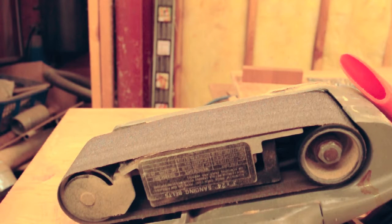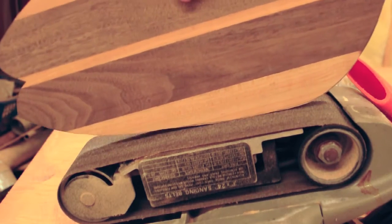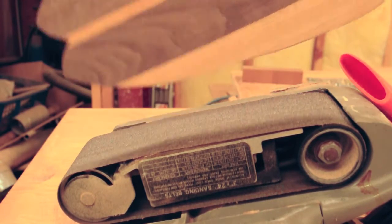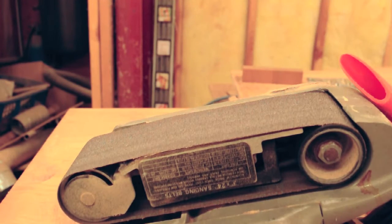Now on the belt sander, we're going to use it to take off any of the bandsaw marks. And then we're also going to use it to round out the nose.